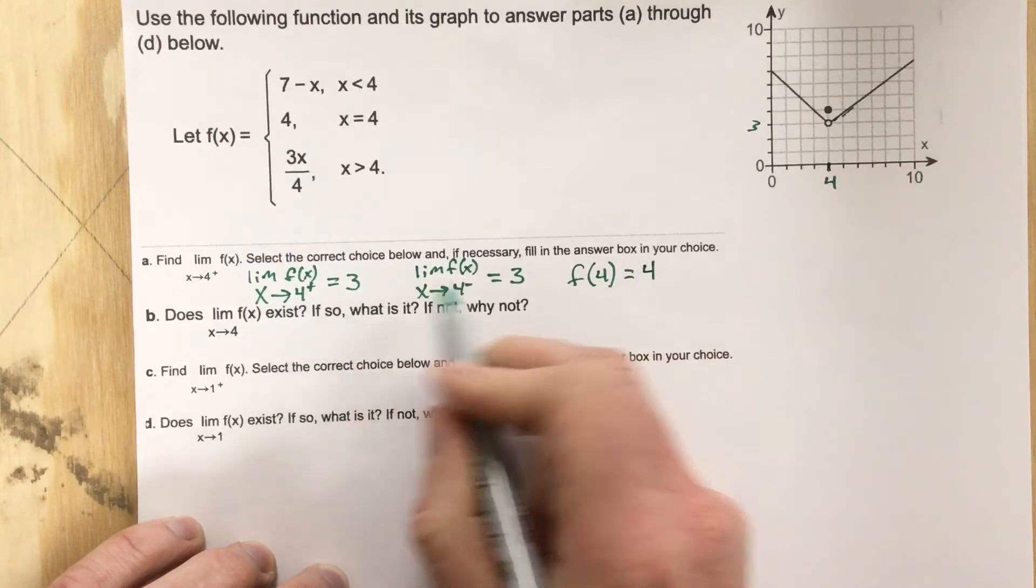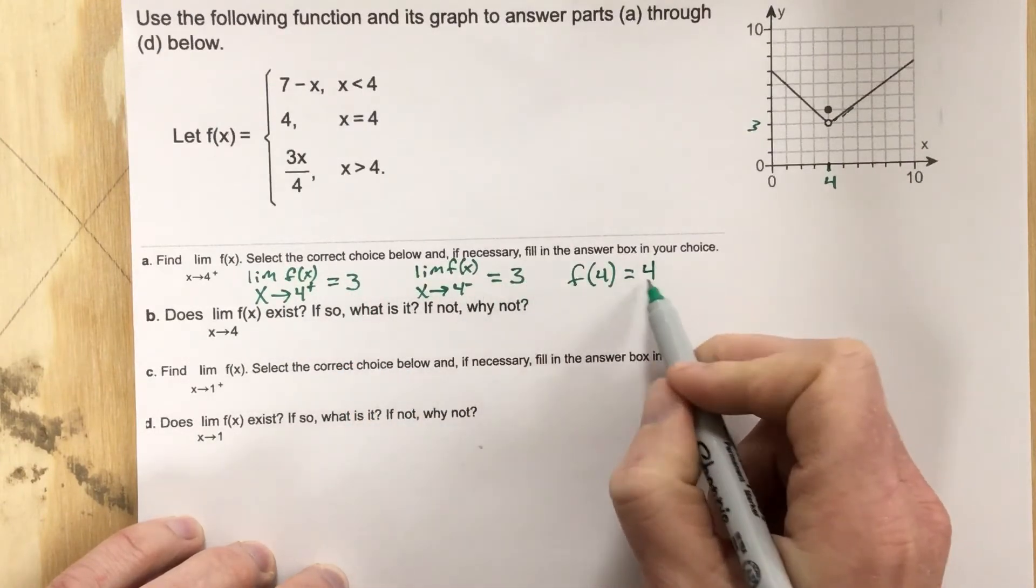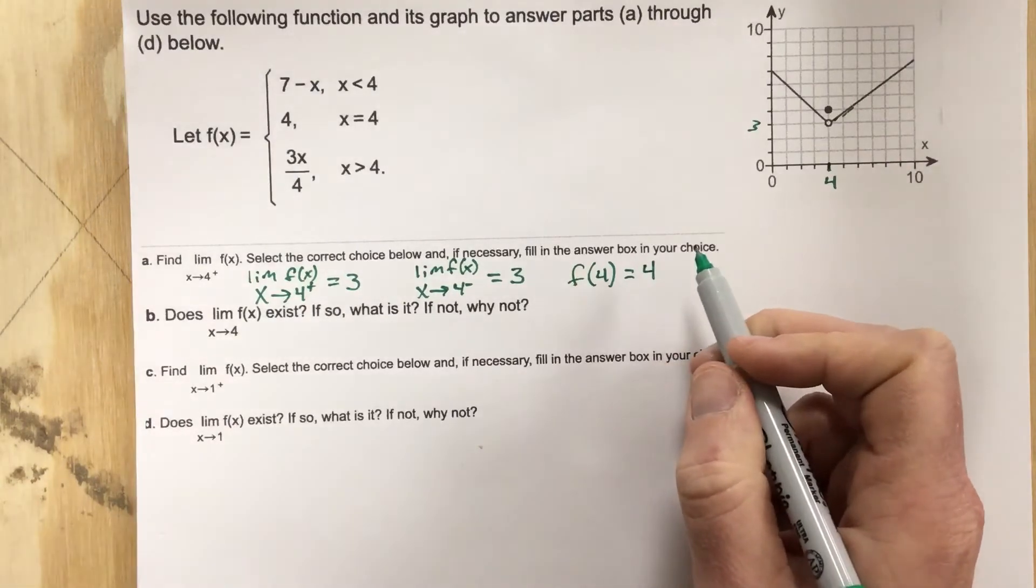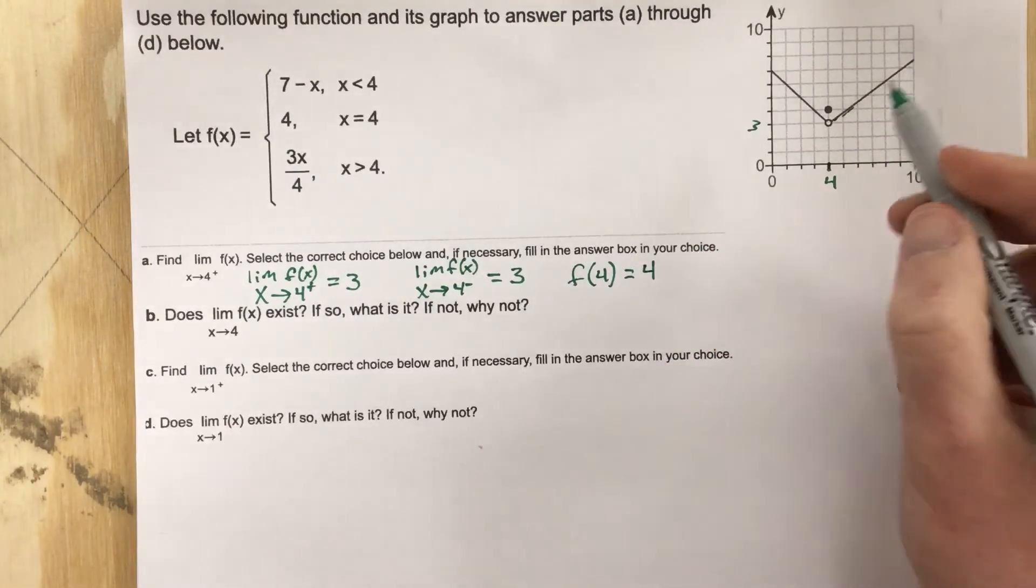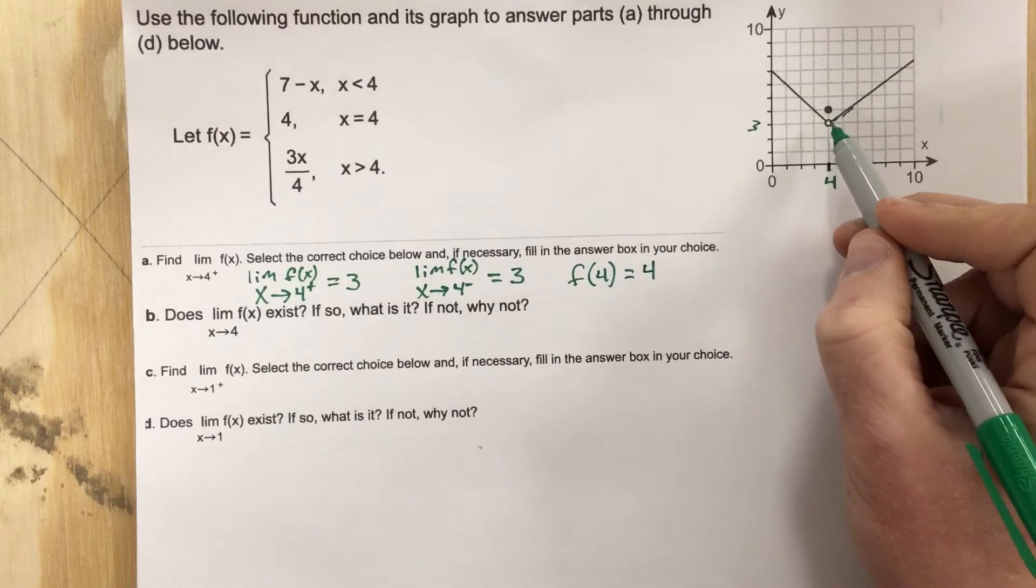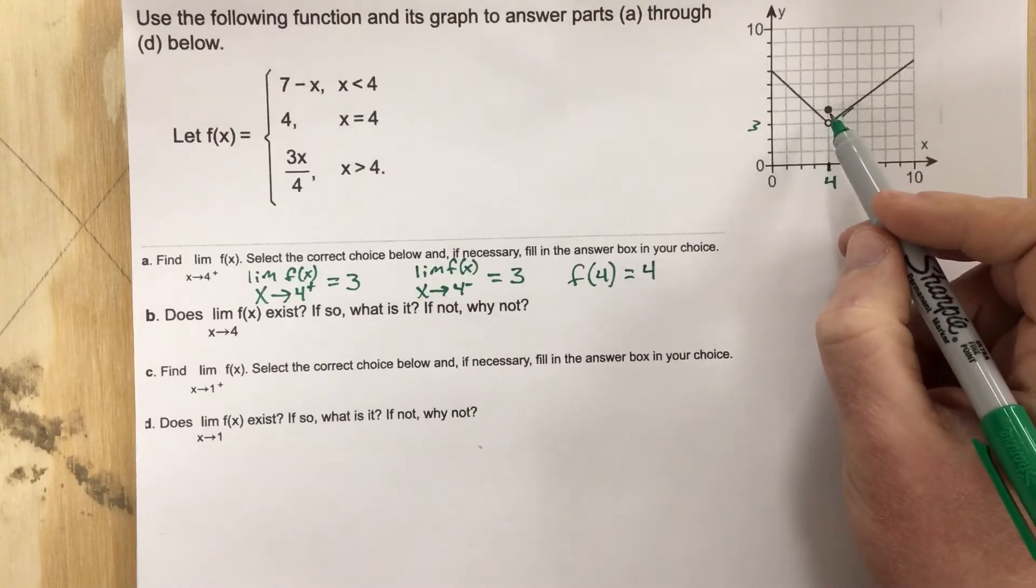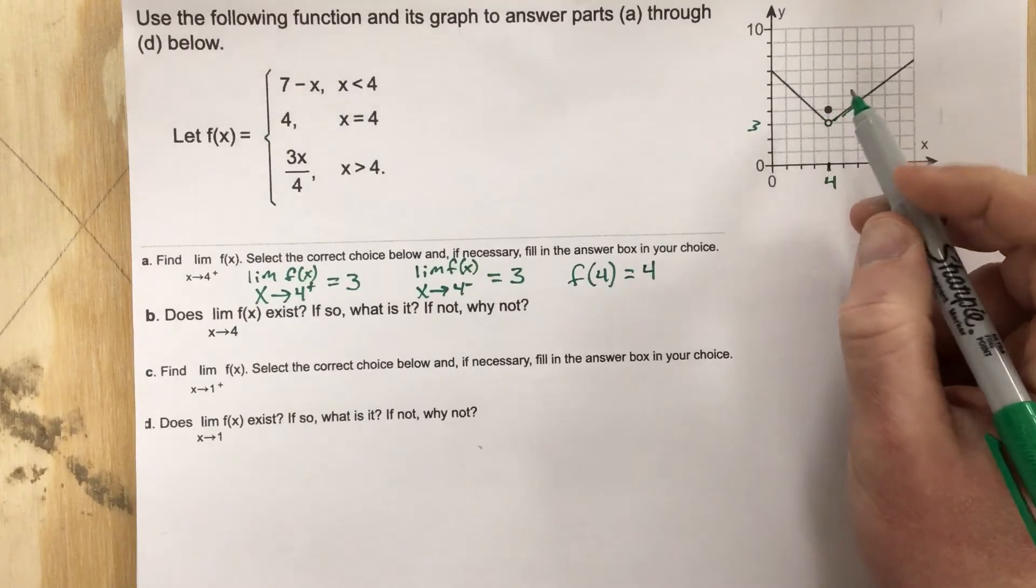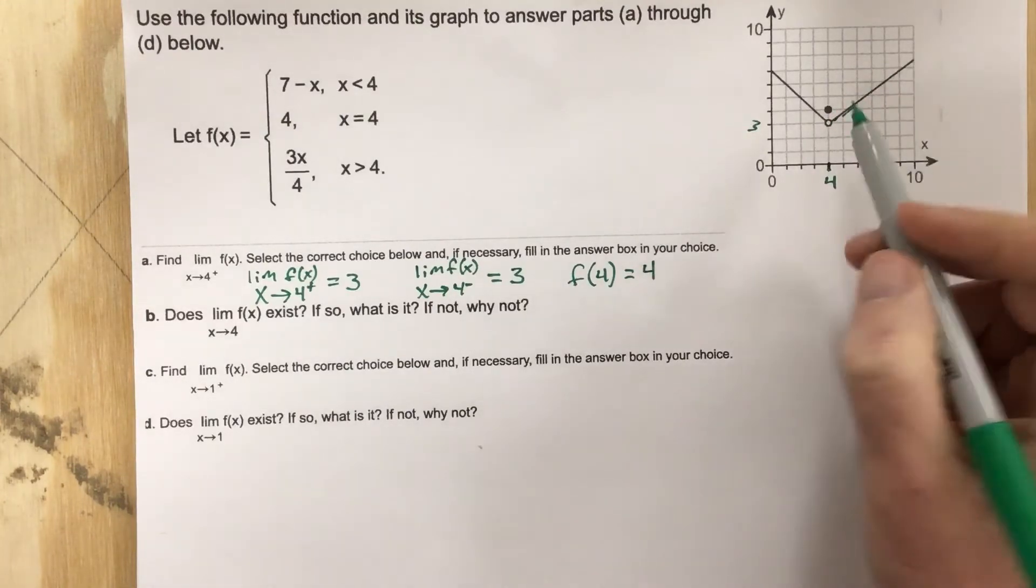Okay, so our limiting value is different from our value that we get when we actually plug the number into the function. This can happen because if we have just for our function a random point that is defined that is away from the rest of the function, then your limits are going to be different than your defined point.